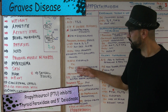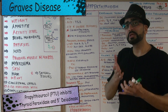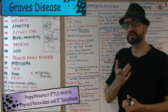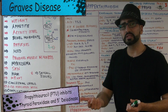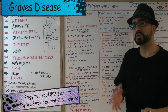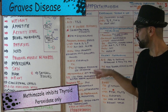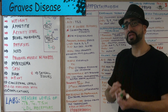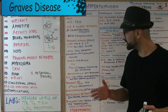Treatment of hyperthyroidism begins with thioamides. PTU (propylthiouracil) inhibits thyroid peroxidase — involved in coupling, organification, and oxidation reactions — and also inhibits 5'-deiodinase, which converts T4 to T3. Methimazole only inhibits thyroid peroxidase. Adverse effects include skin rash, agranulocytosis, aplastic anemia, and hepatotoxicity.